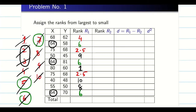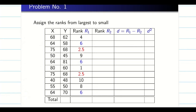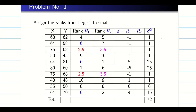We have now allocated ranks for X. Similarly allocate ranks for Y. Once ranks are allocated for both columns, compute d = Rank X minus Rank Y (or Rank Y minus Rank X — since we square it, sign doesn't matter). Find d² for each pair and compute the summation of d², which comes out to 72. Now we address the correction factor.